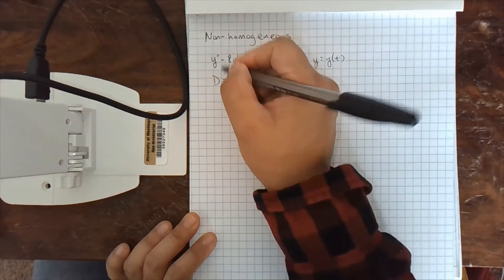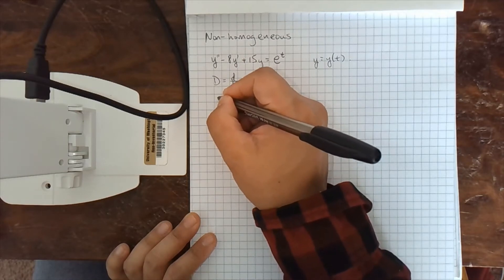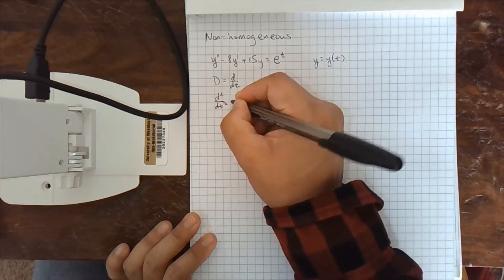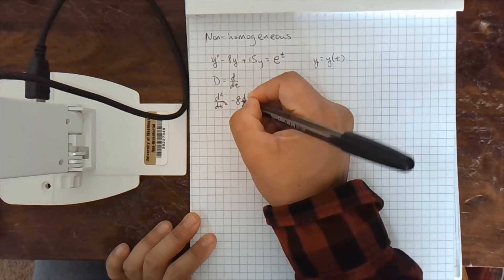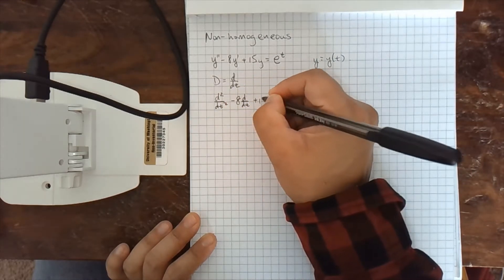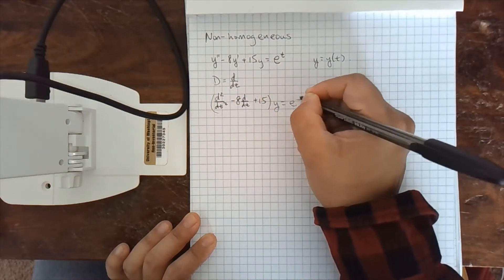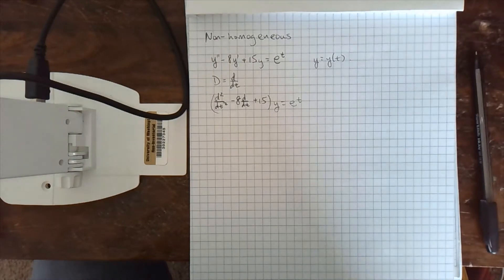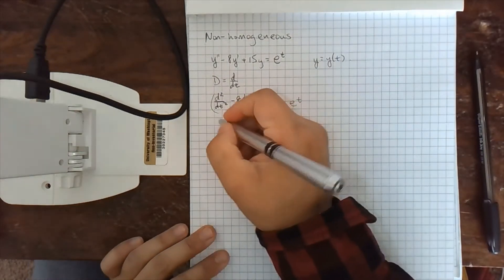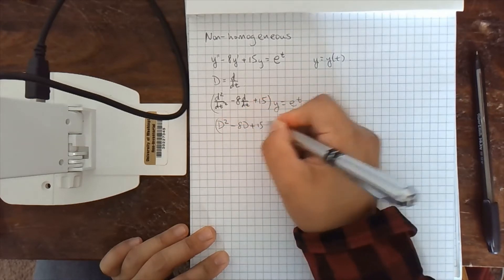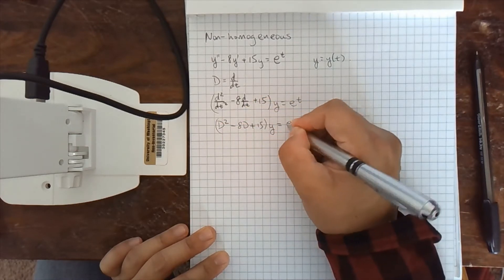And then we'll be able to rewrite this. So this is the second derivative. I'm going to just factor out the y on the right immediately. That's e to the t. I think this pen is running out, so I will switch. And then this is d squared minus 8d plus 15y equals e to the t.